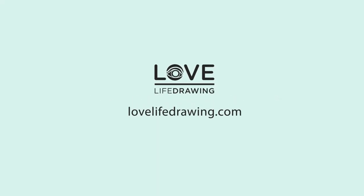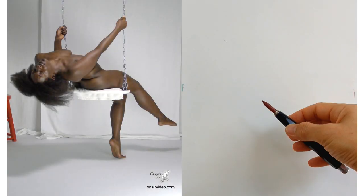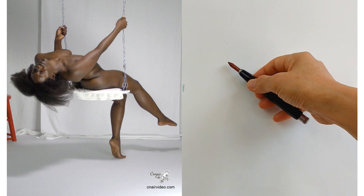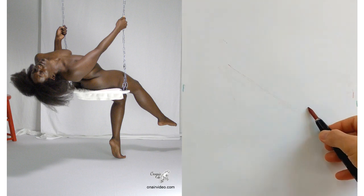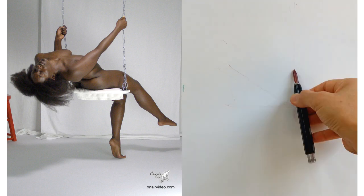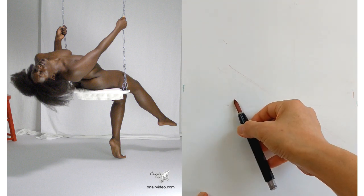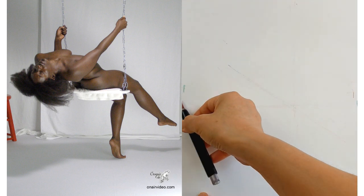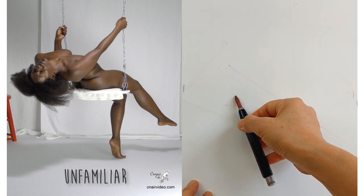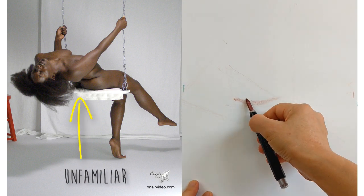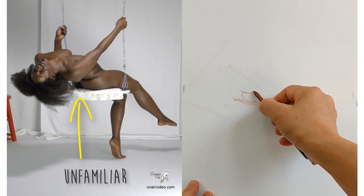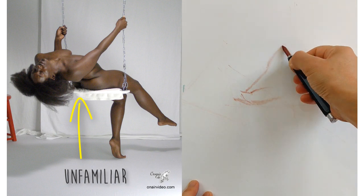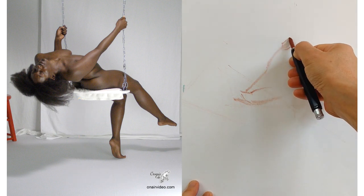In our first foreshortening video we looked at how foreshortening itself isn't the problem. We draw foreshortening successfully all the time. The problem is more that there are some angles from which we're not used to seeing and observing and drawing the figure. So that means that to overcome the challenge of foreshortening we need to get used to drawing the figure from those foreshortened angles.